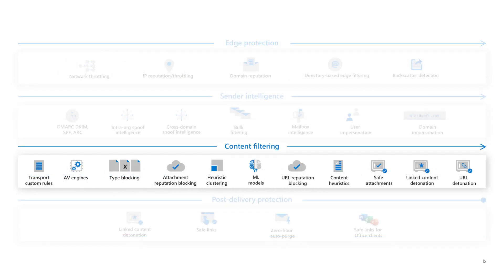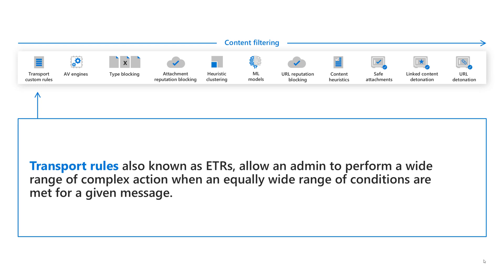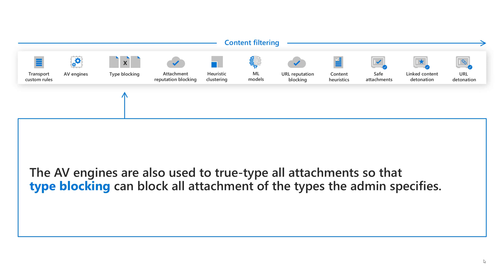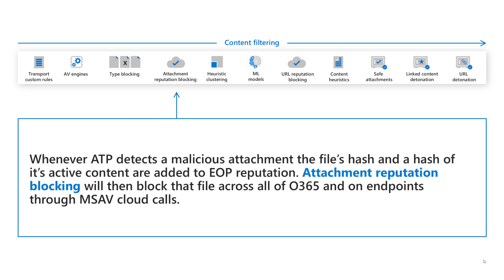Next, let's talk about content filtering. Transport rules, also known as ETRs, allow an admin to perform a wide range of complex actions when an equally wide range of conditions are met for any given message. Microsoft antivirus engines and multiple other antivirus engines are used to detect all known malware in attachments. The AV engines are also used to true-type all attachments so that type blocking can block all attachments of the types the admin specifies by file extension. Whenever ATP detects a malicious attachment, the file's hash and a hash of its active content are added to EOP reputation, and attachment reputation blocking will then block that file across all of Office 365 and on endpoints throughout Microsoft antivirus cloud calls.